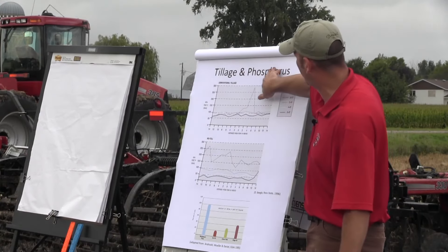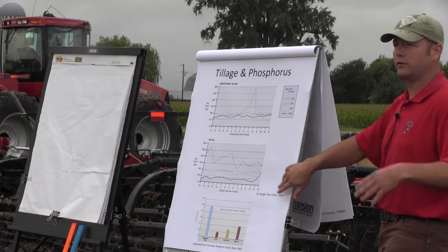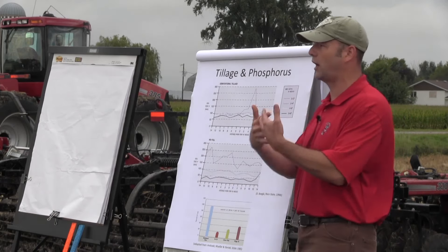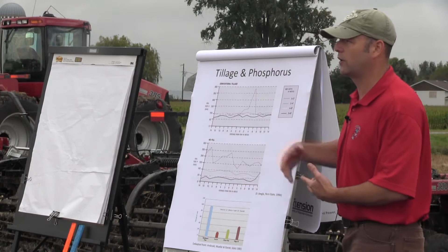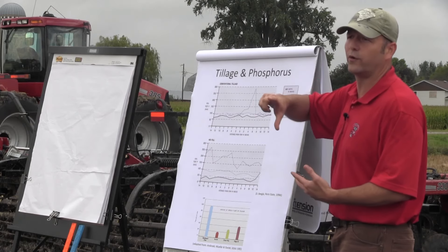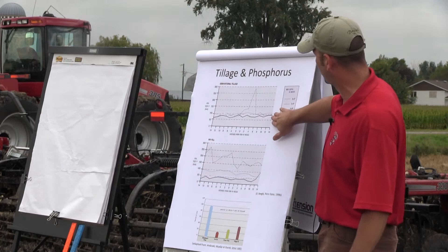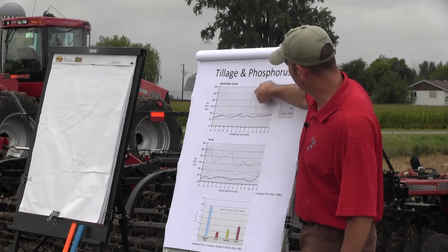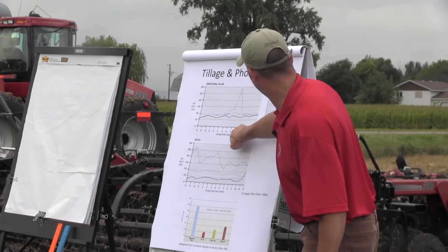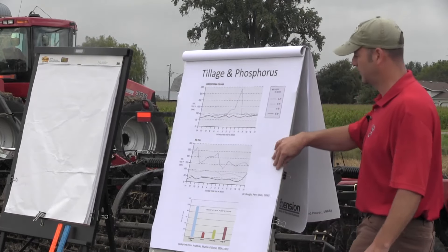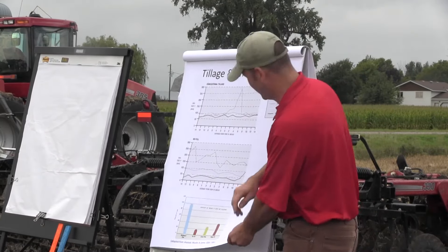Looking at phosphorus in conventional tillage versus no-till — depending on your sufficiency index for phosphorus, you may need to sample differently in no-till versus conventional. In no-till you might need to sample at 0-2 inches and then 4-6 inches separately. In a conventional system that's more straightforward because you have incorporation. There's a little spike in the data here — that's likely a fertilizer band placed about three inches from the row.